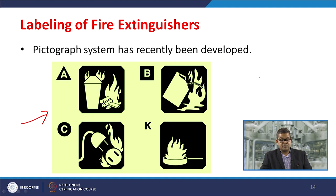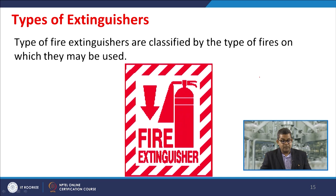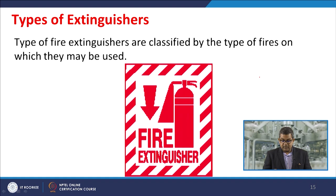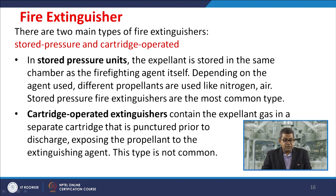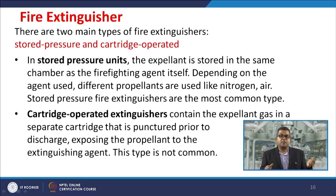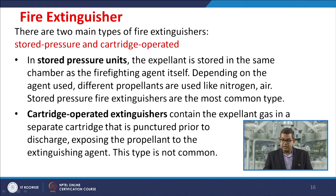Types of extinguishers are classified by the type of fires on which they may be used. There are two main types: stored pressure and cartridge operated. In a stored pressure unit, the expellant is stored in the same chamber as the firefighting agent, using propellants such as nitrogen or air. Stored pressure fire extinguishers are the most common type, found in domestic, office, and industrial settings. Cartridge operated extinguishers contain the expellant gas in a separate cartridge that is punctured prior to discharge, and are used for specific applications.